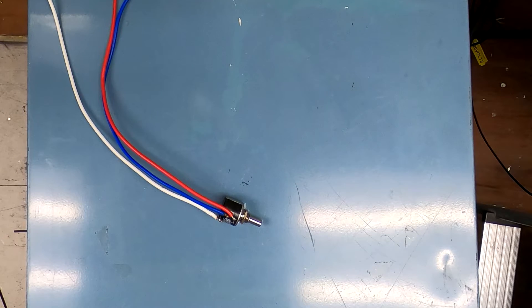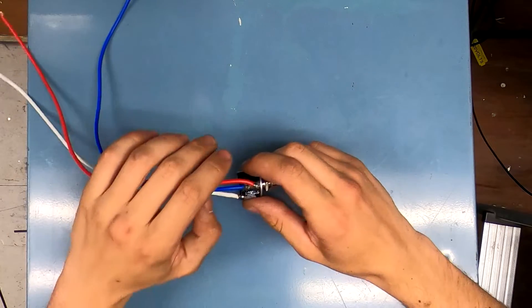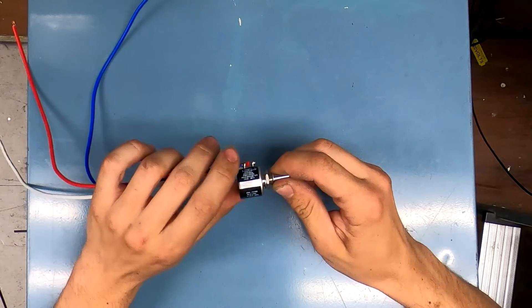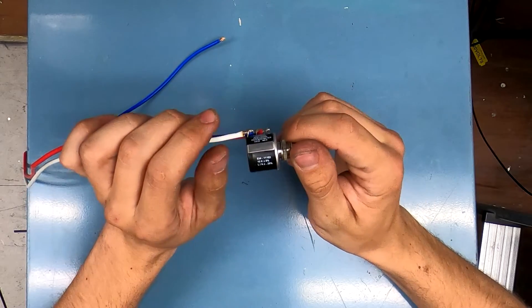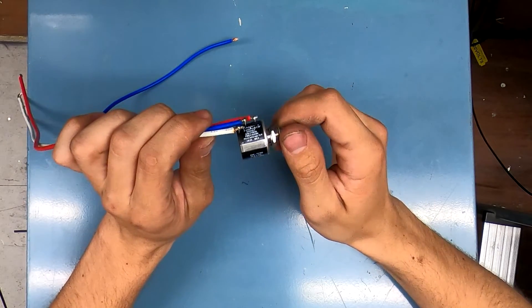What is up YouTube? HitechLab here in the off-grid room today playing with this potentiometer. This is a 10k wire wound potentiometer as you can see here on the side. It's 10 kilo ohms plus or minus 5 percent.